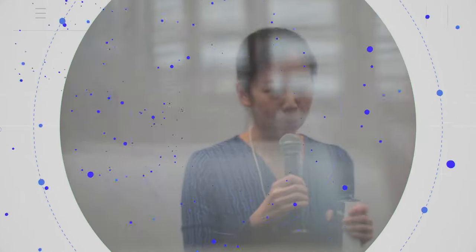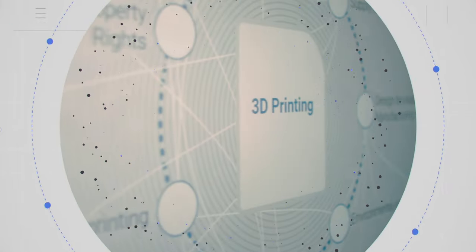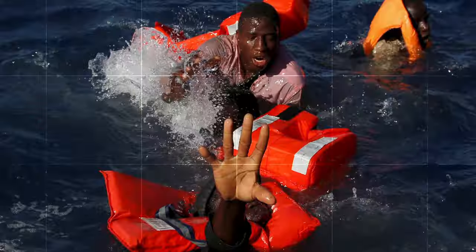By drawing on the collective intelligence of the Forum's networks, transformation maps explain the factors driving change across industries, economies and global issues.